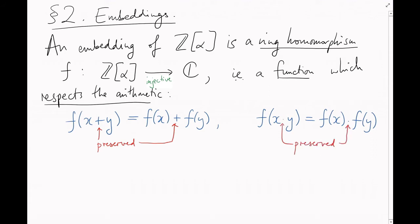If you've never seen one of these before, these conditions are actually pretty restrictive. f must always send 0 to 0, 1 to 1, 2 to 2, and so on. In fact, every integer can only be sent to itself. Embeddings do nothing at all interesting on integers.